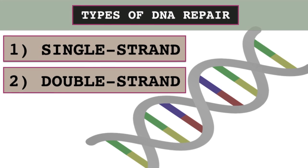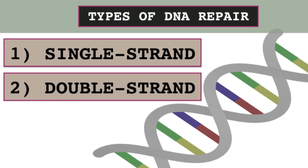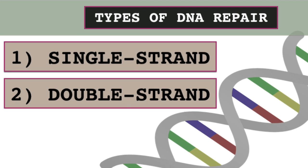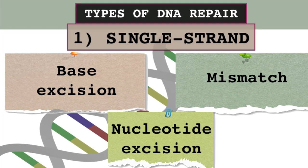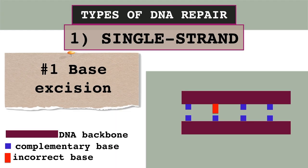Generally, there are two types of repair in case of DNA damage: a single-strand repair, in which the mutation affects only one strand of the DNA, and a double-strand in which both strands are affected. The single-strand repair may include base excision, nucleotide excision, or a mismatch repair. The base excision occurs when an incorrect nitrogenous base is found within the DNA sequence. This repair mechanism involves the removal of the incorrect base and the addition of the correct one, which will be complementary to the nitrogenous base of the neighboring DNA strand.